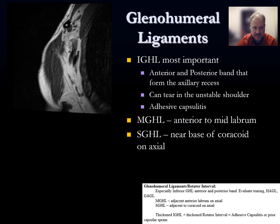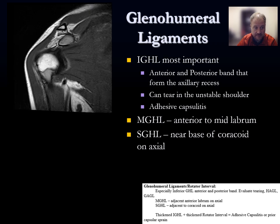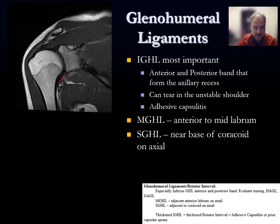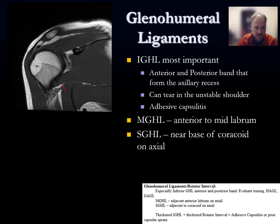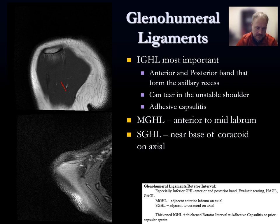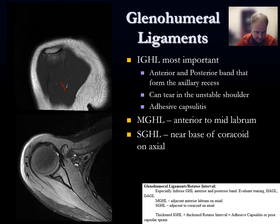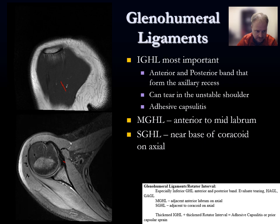On coronal images, scroll through looking for the inferior glenohumeral ligament as a dark black ligament along the inferior glenohumeral joint — anterior band then posterior band. On axial images, with the subscapularis visible anteriorly, find the middle glenohumeral ligament right in front of the anterior labrum. In a normal case it appears as a thin dark structure immediately anterior to the labrum.